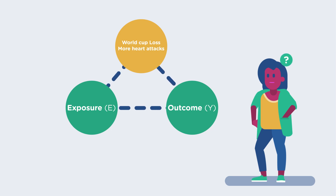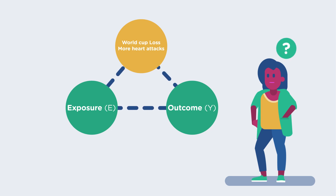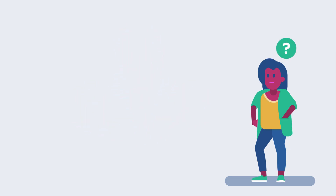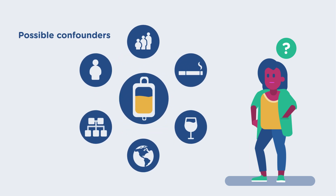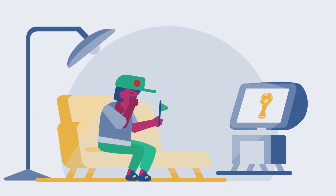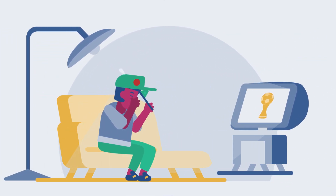So how might we identify confounding factors? To identify confounding factors, it can be helpful to draw out the relation between the exposure, outcome, and other variables related to the exposure or outcome. We will apply this to the second example: we are interested in finding out whether there is a difference in heart attack rate between the evening of the World Cup final and a regular evening.